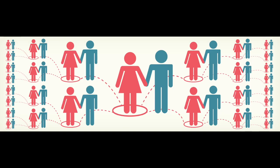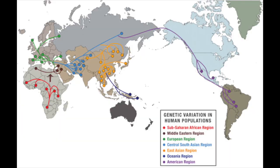Which means that the females carry down this genetic makeup, while the males inherit it but are unable to pass it down. But follow the branches back to the beginning, and the tree reveals that ultimately we all have our roots in the same place.